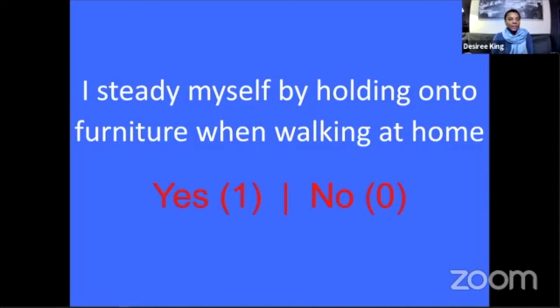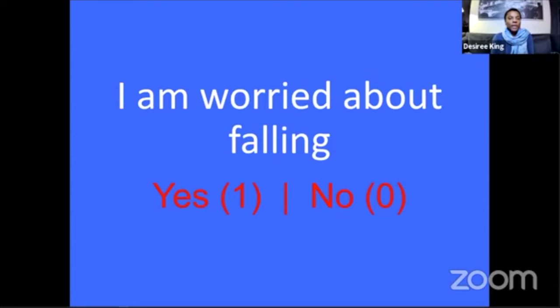The next statement: I steady myself by holding onto furniture when walking at home. This is also a sign of poor balance. The next statement: I am worried about falling. People who are worried about falling are more likely to fall. The fear of falling becomes more common as people age, even among those who haven't fallen. It may lead older people to avoid activities such as walking, shopping, or taking part in social activities.